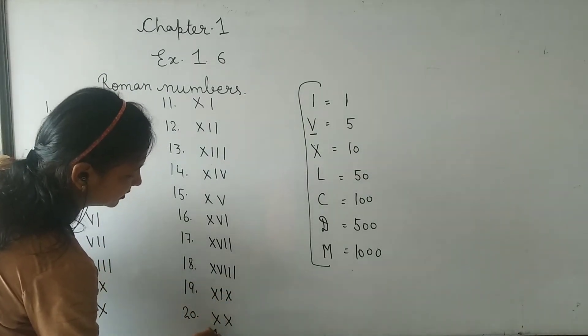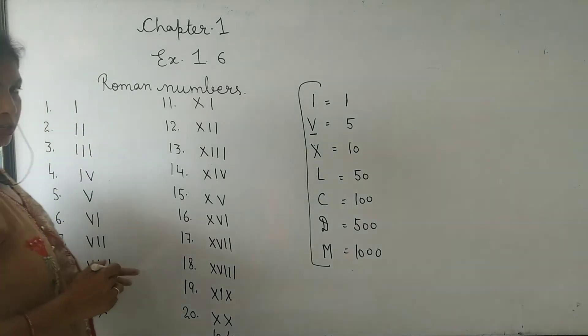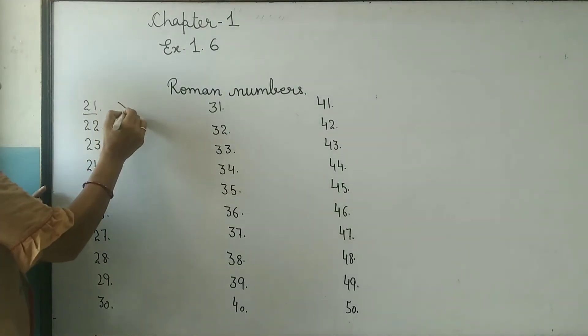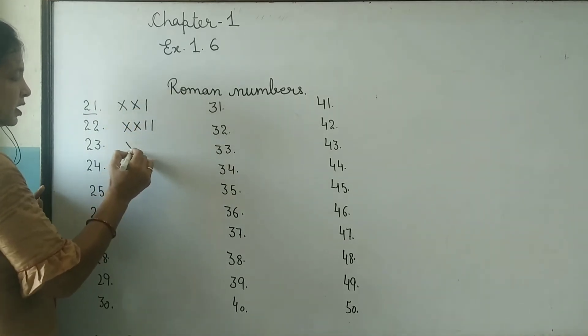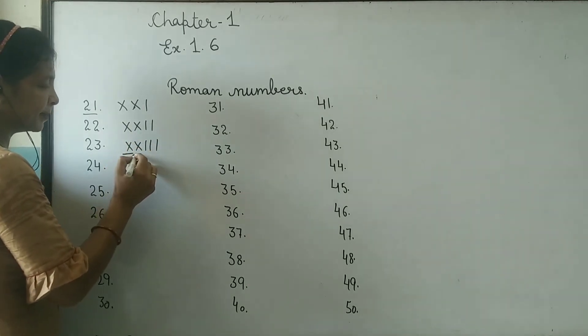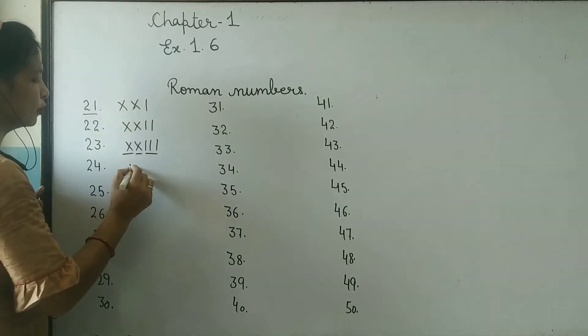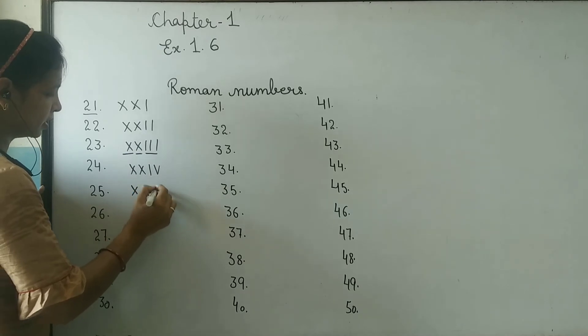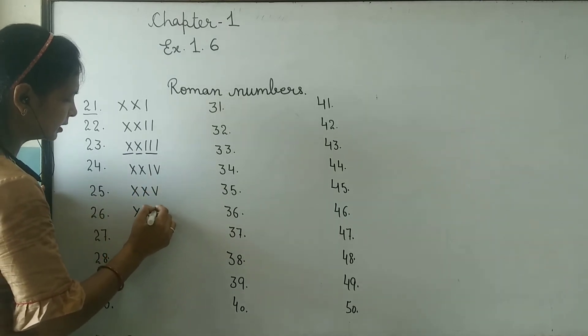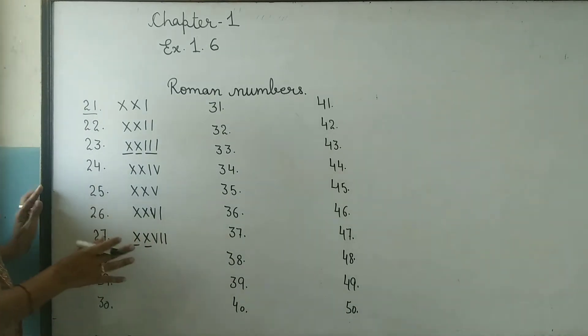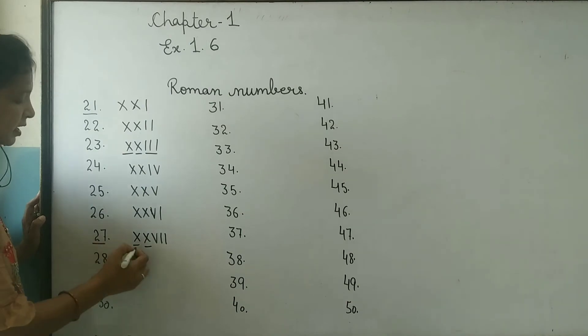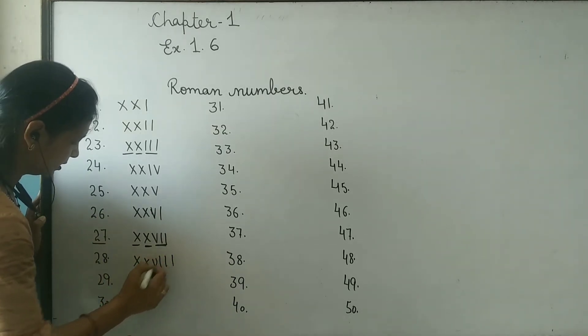20 is XX. 21 is XXI. 22 is XXII. 10 plus 10 is 20. Then 24, 25, 26, 27. This is how we have to do it. 27 is XX and VII. 28 is XXVIII. Next is 29, which is XXIX. Next is 30.